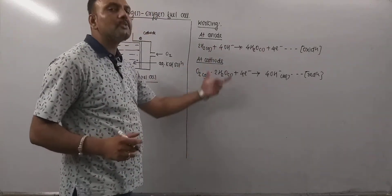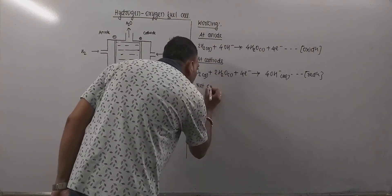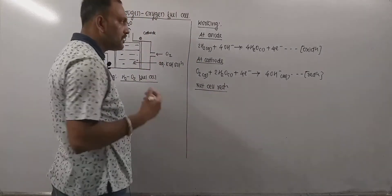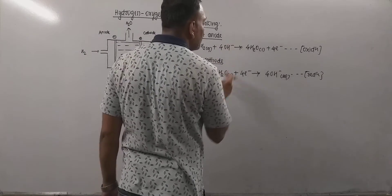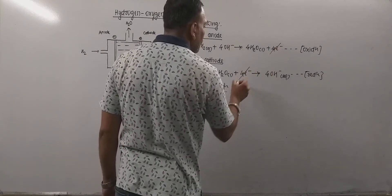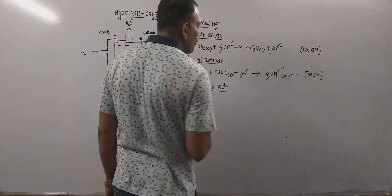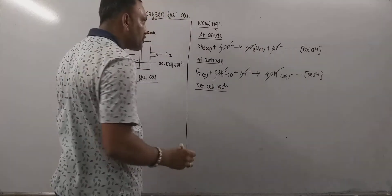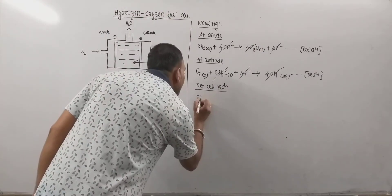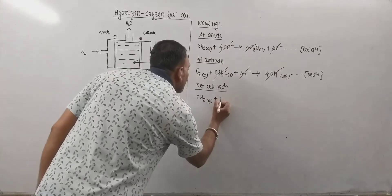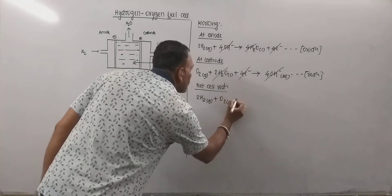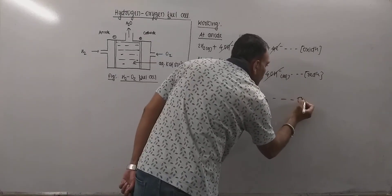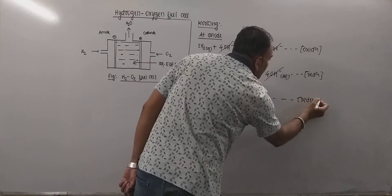When we add these two we get the net cell reaction. Remember, cell reaction is always a redox reaction. So when we add these two what happens? Electrons get cancelled. 4OH minus get cancelled. Twice of H2O get cancelled. Here remains 2H2O. So what is the net redox reaction then? Twice of H2 gas plus O2 gas gives twice of H2O liquid. Remember, this is a redox reaction.